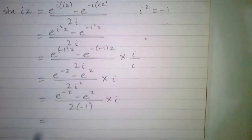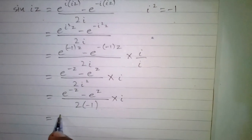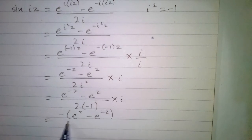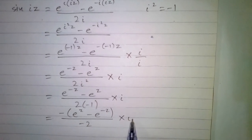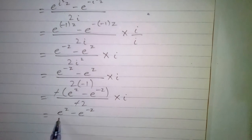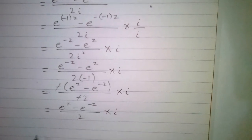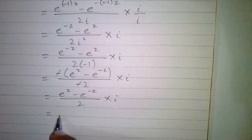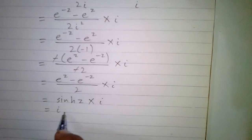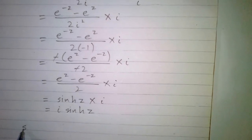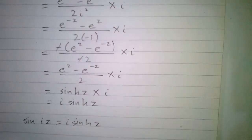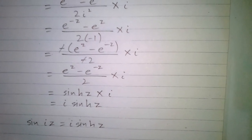Now we take minus sign common from the numerator, so we have minus times e to the power z minus e to the power minus z upon minus two times iota. We know that this is the formula of hyperbolic sine, so we can write iota times hyperbolic sine of z. Therefore, sine of iota z is equal to iota times hyperbolic sine of z. This is what was to be shown, and this is also called Osborn's rule.